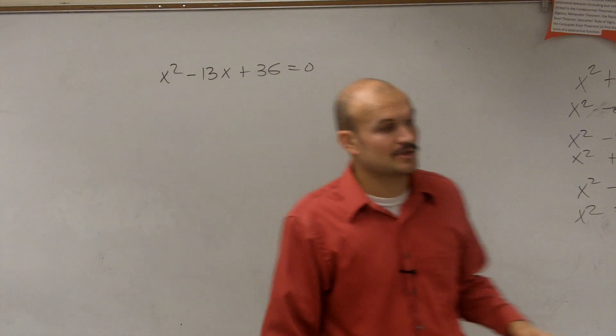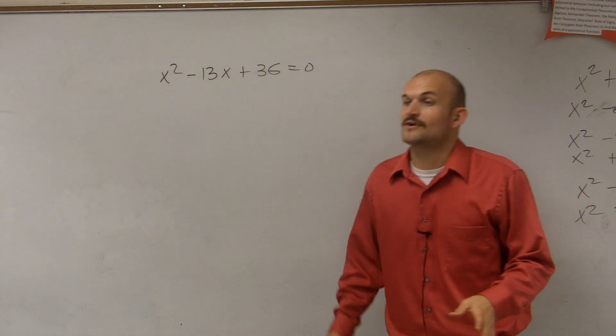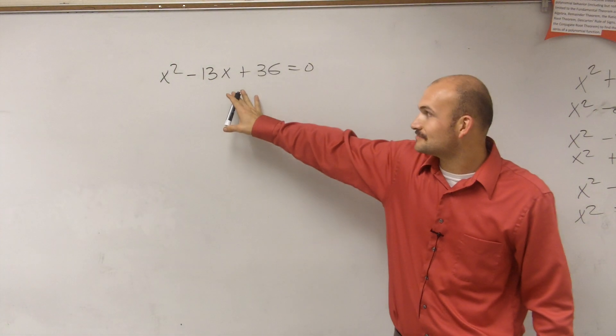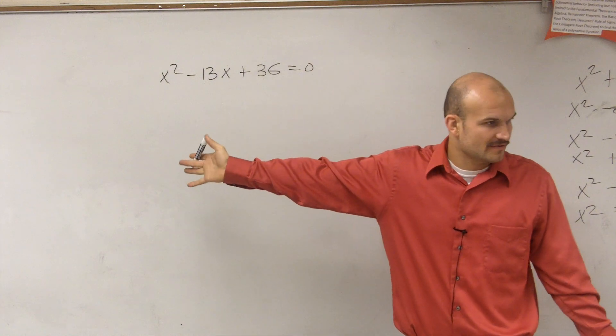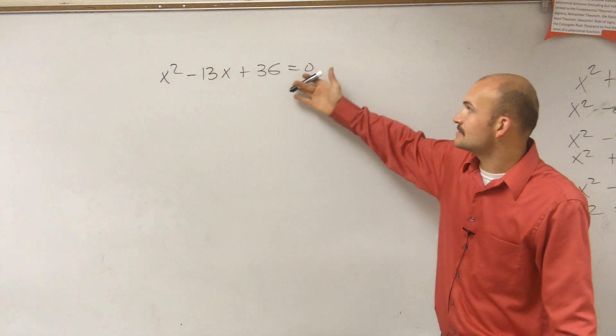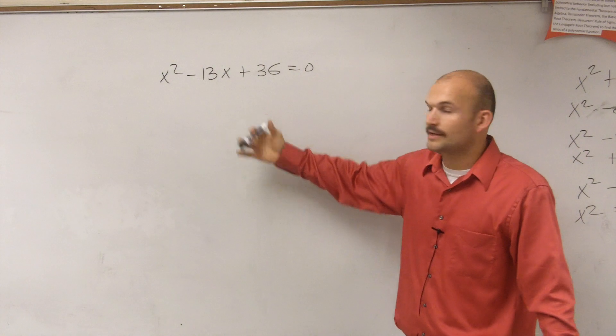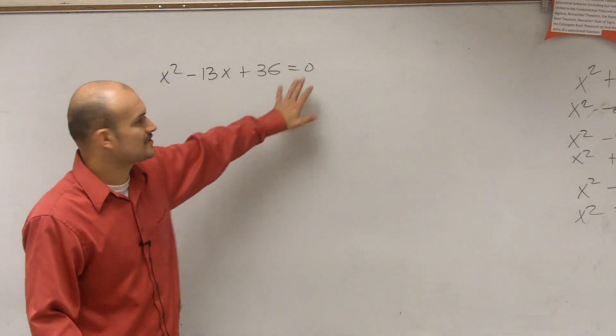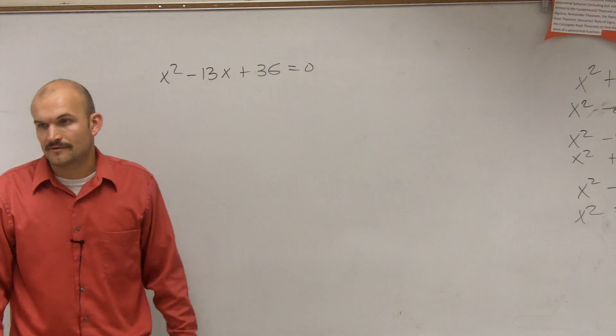So I can't factor this by using perfect squares. The next thing I want to do is see if I can find other two values that I can factor this with. So I look at what you have 12 and 3, 6 and 6.